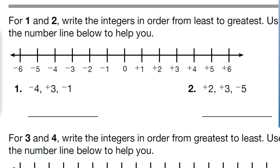So if we look at these integers here, we've got negative 4, positive 3, and negative 1. So if you have a number line in front of you, you can go ahead and just plot those on the number line. Here's negative 4, negative 1, and positive 3.